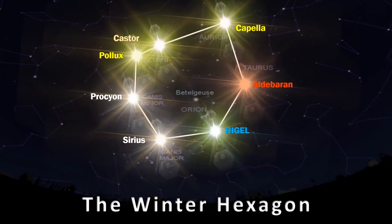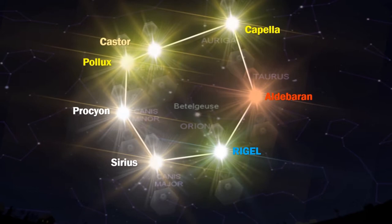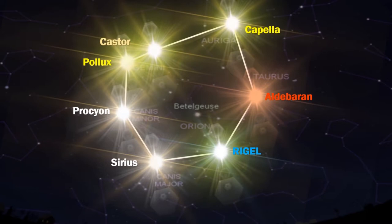Channel regulars will know that I'm a big fan of the Winter Hexagon. As winter rapidly approaches us in the Northern Hemisphere, we'll once again be able to see one of the most stunning asterisms of all, the Winter Hexagon that contains Rigel, Capella, Pollux, Procyon, Sirius, and of course Aldebaran.